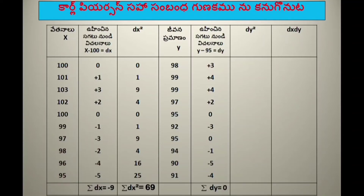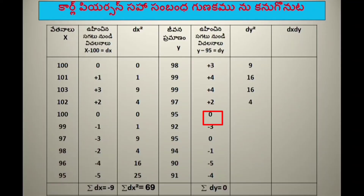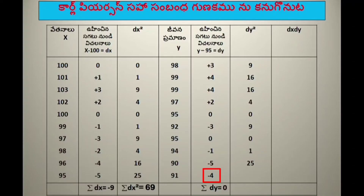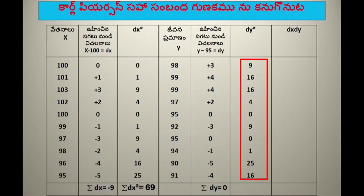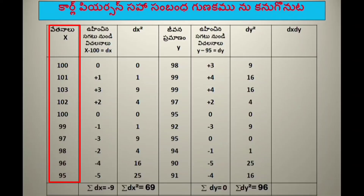Next, we compute dy² values: (+3)²=9, (+4)²=16, (+4)²=16, (+2)²=4, 0²=0, (−3)²=9, 0²=0, (−1)²=1, (−5)²=25, (−4)²=16. The total sigma dy² is equal to 96.